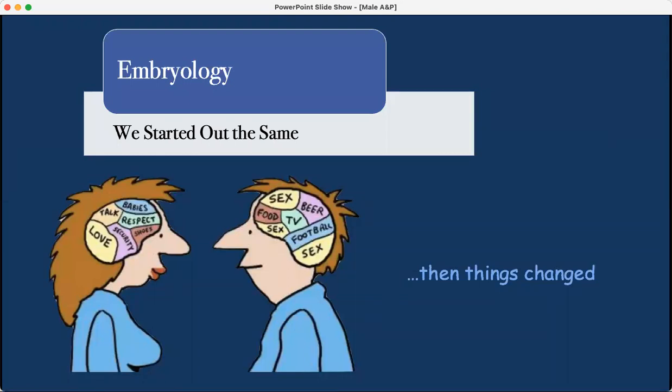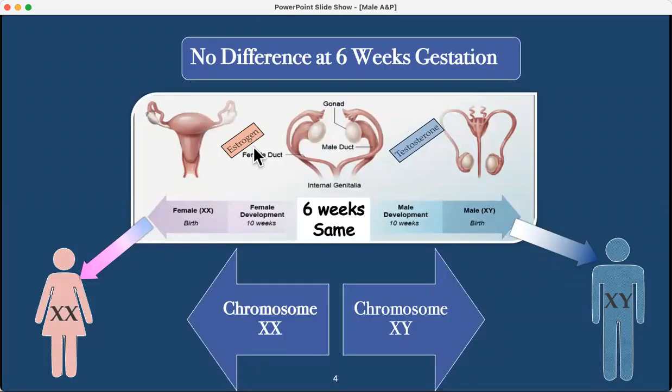In terms of embryology, everything starts out exactly the same, and then things change around six weeks during embryologic development. At six weeks, you can't tell a difference between male and female. The internal genitalia looks the same; the male gonads are all the way up in the abdomen, just like where the female gonads end up staying. Then at six weeks, things start to change with chromosomal influence. At about 10 weeks, female development starts, and then male development begins as well with testosterone influence, the testicles moving down through the inguinal canal.